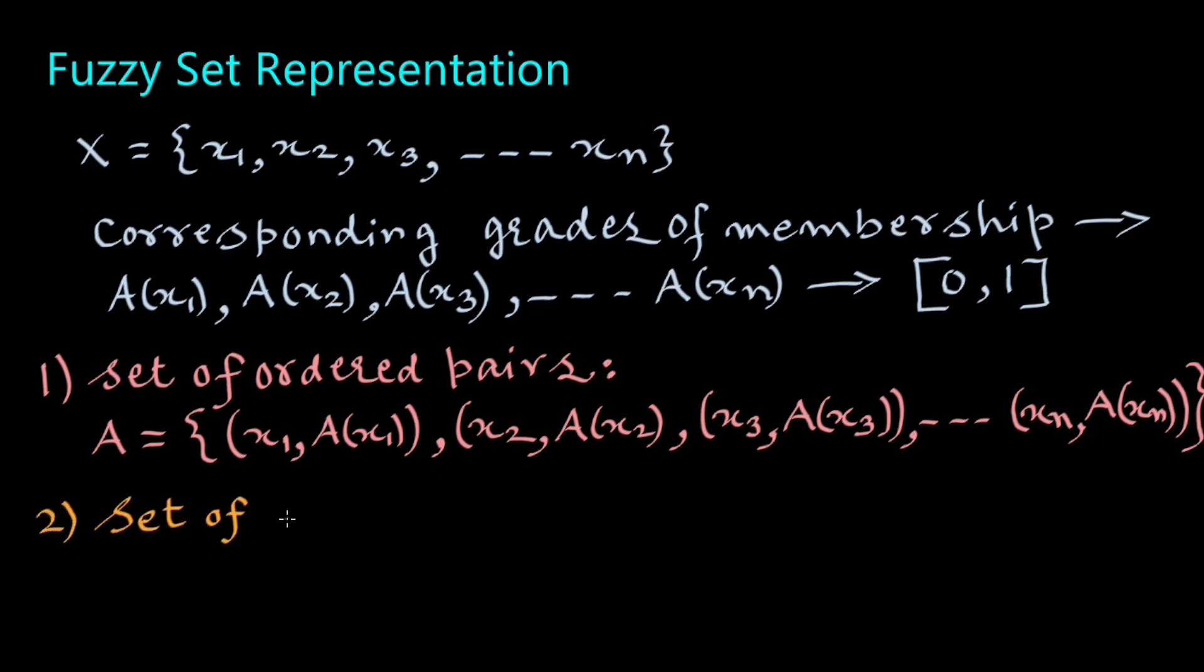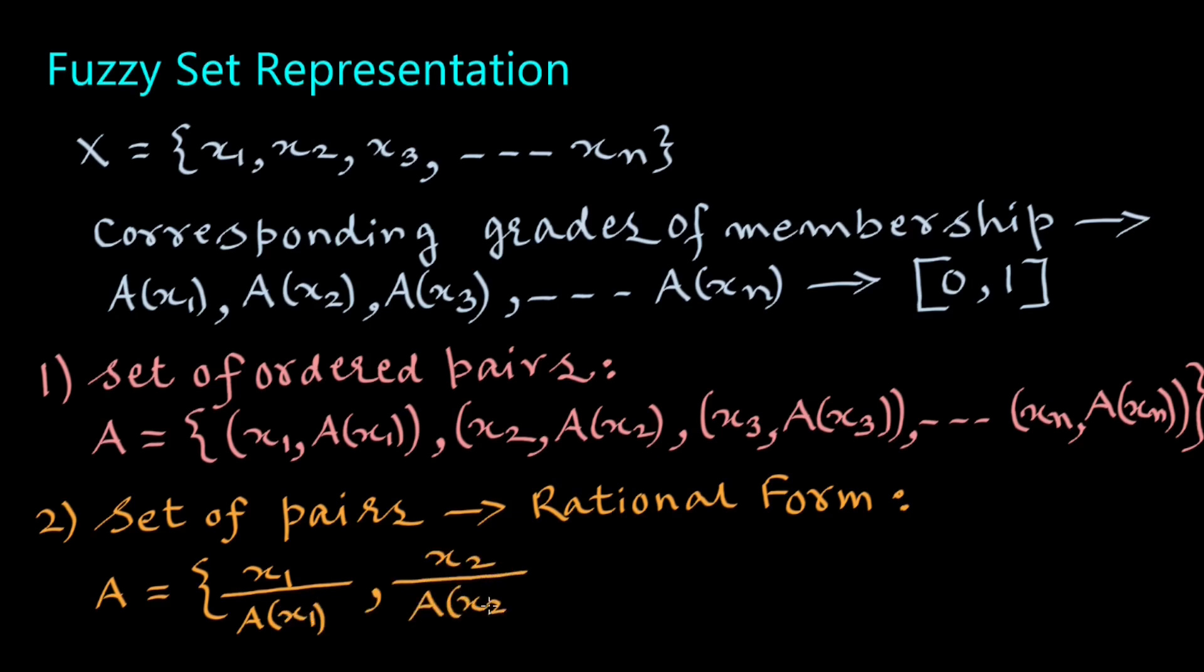Or Number 2, a set of rational pairs written in rational form: A equals A(X1)/X1 + A(X2)/X2 + A(X3)/X3 + etc. A(Xn)/Xn.